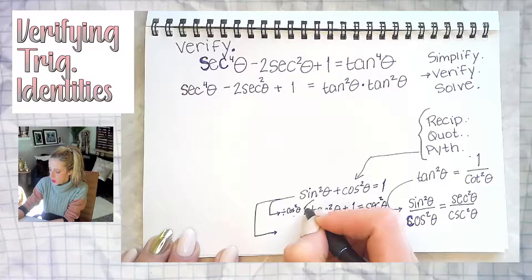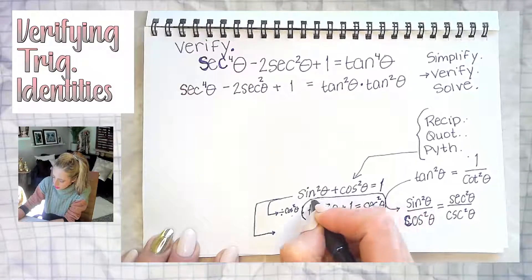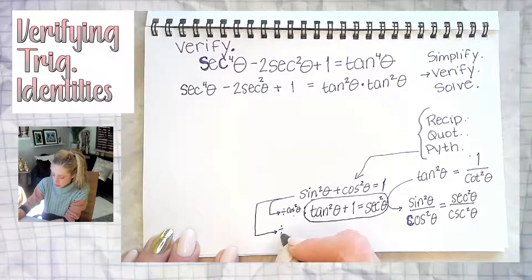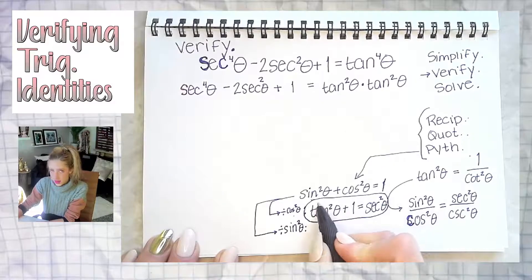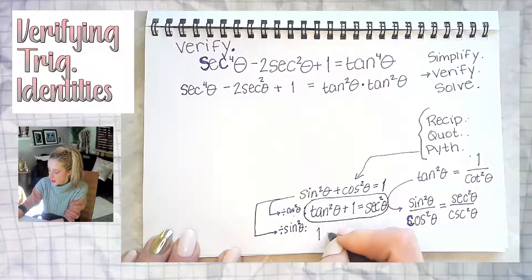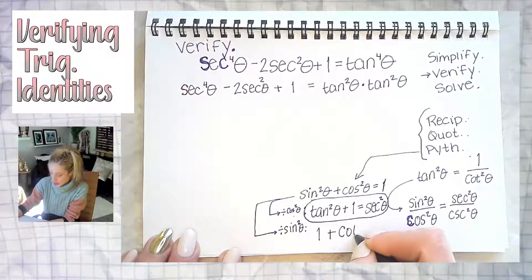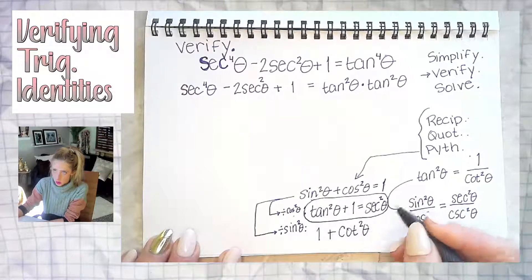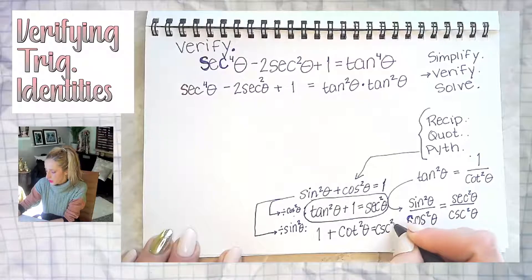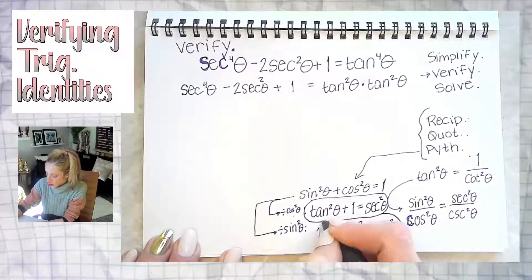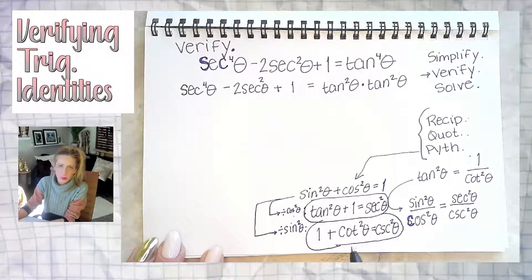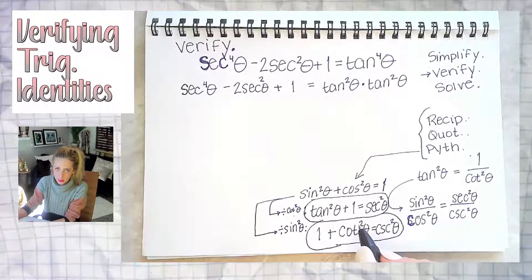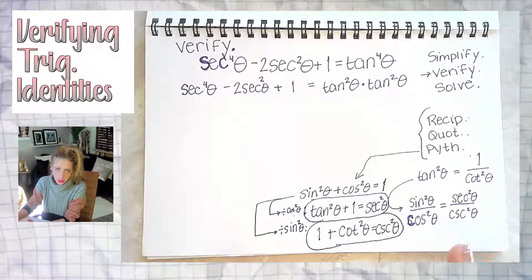That's the Pythagorean identity we'll use for this example. The other version: if you go back to sin²θ + cos²θ = 1 and divide everything by sin²θ, you get 1 + cot²θ = csc²θ. As long as you know the first identity and what to do with it, you can derive the others in an emergency. So now you know it.